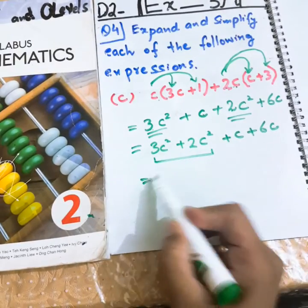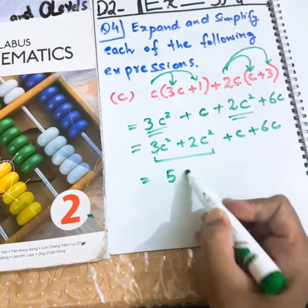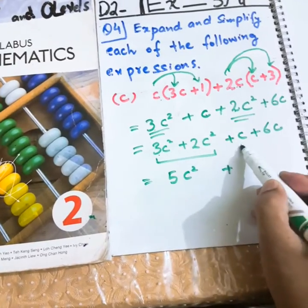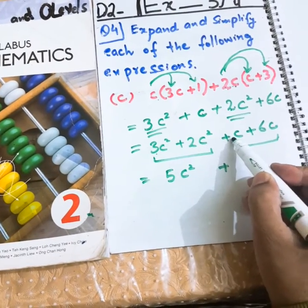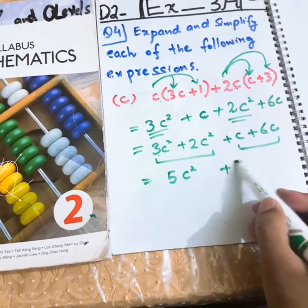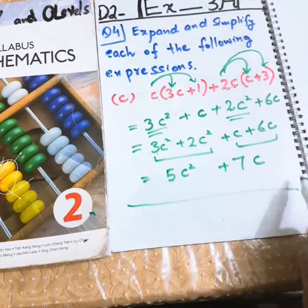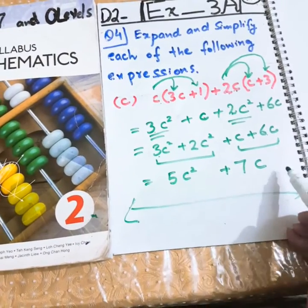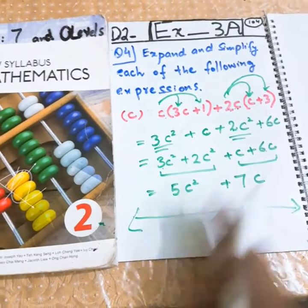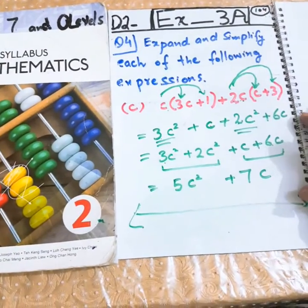Now, both of these will be added. 3 and 2 will be 5C squared. And both of these will be added. Invisible 1C and 6C. 1 and 6 will be 7C. So, question has been finished. This is the answer. Now, you have some time to note down if you haven't note down.